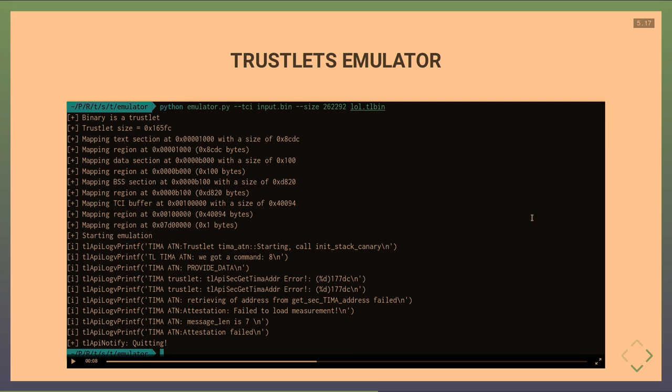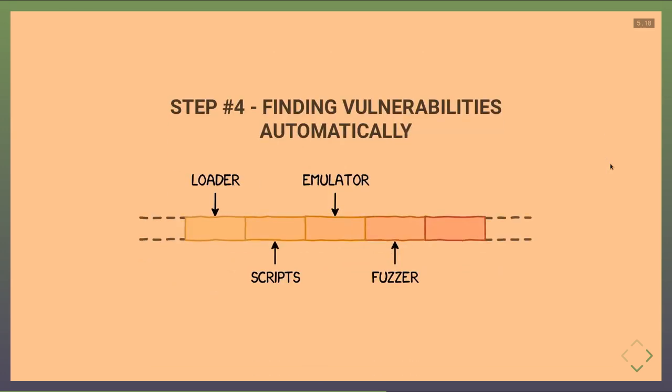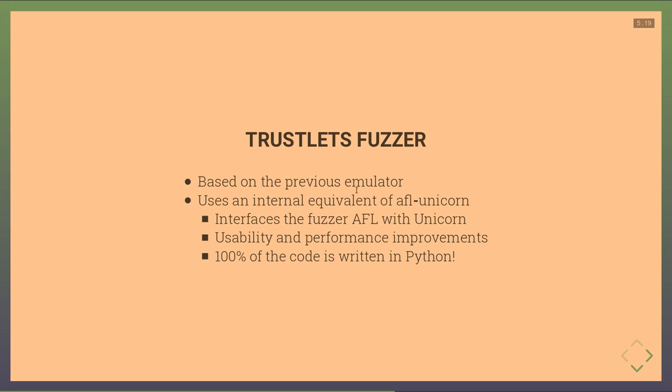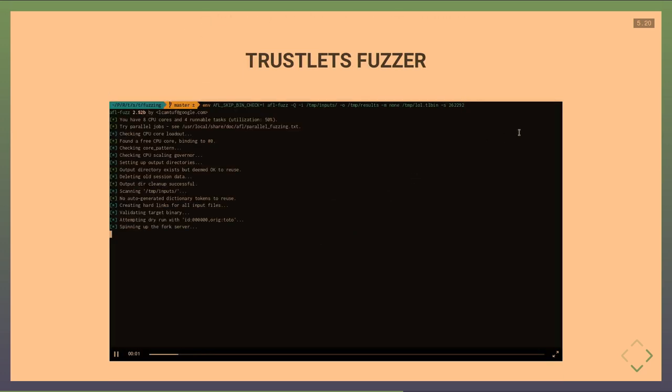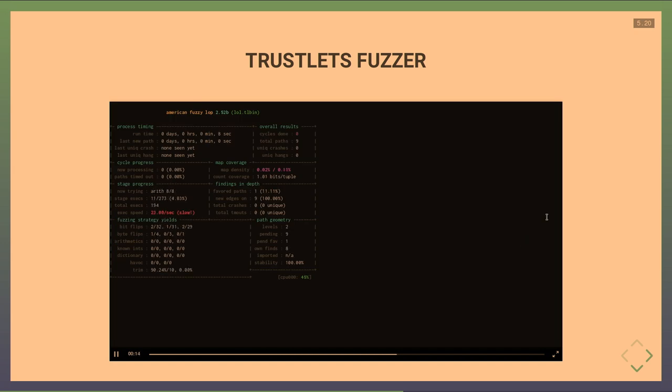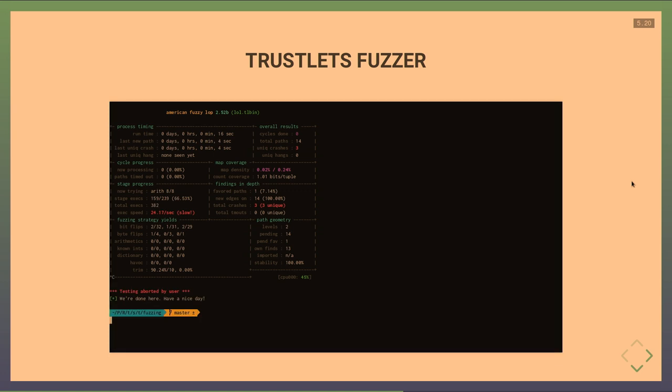We also built a fuzzer based on this emulator, similar to AFL-Unicorn but with better performance. We plug this AFL-Unicorn-like project into our emulator to fuzz trustlets. In a demo, running the fuzzer on a trustlet produced three unique crashes after only 12 seconds — very useful, and we found many vulnerabilities this way.